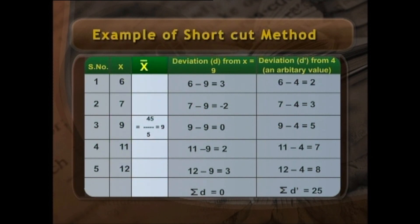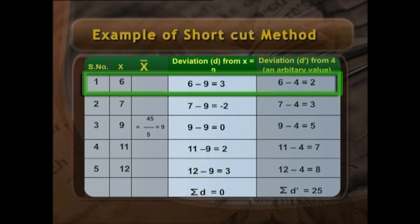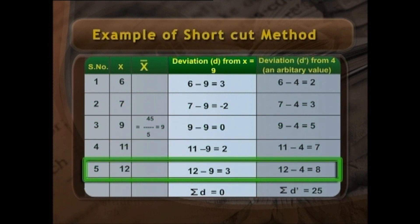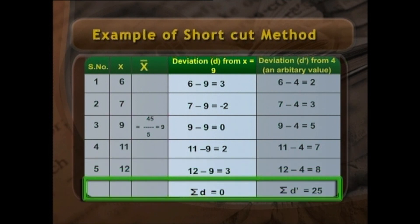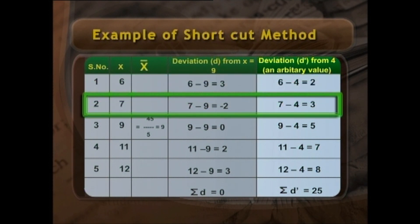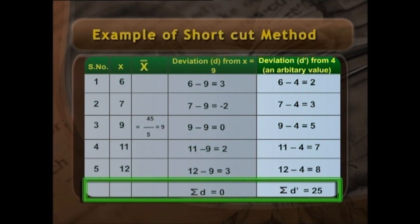Deviations from x̄ = 9: (6−9) = −3, (7−9) = −2, (9−9) = 0, (11−9) = +2, (12−9) = +3; summation of deviations = 0. Deviation d' from an arbitrary value of 4: (6−4) = 2, (7−4) = 3, (9−4) = 5, (11−4) = 7, (12−4) = 8; Σd' = 25. This confirms that deviations from the mean sum to zero while deviations from any other value do not.